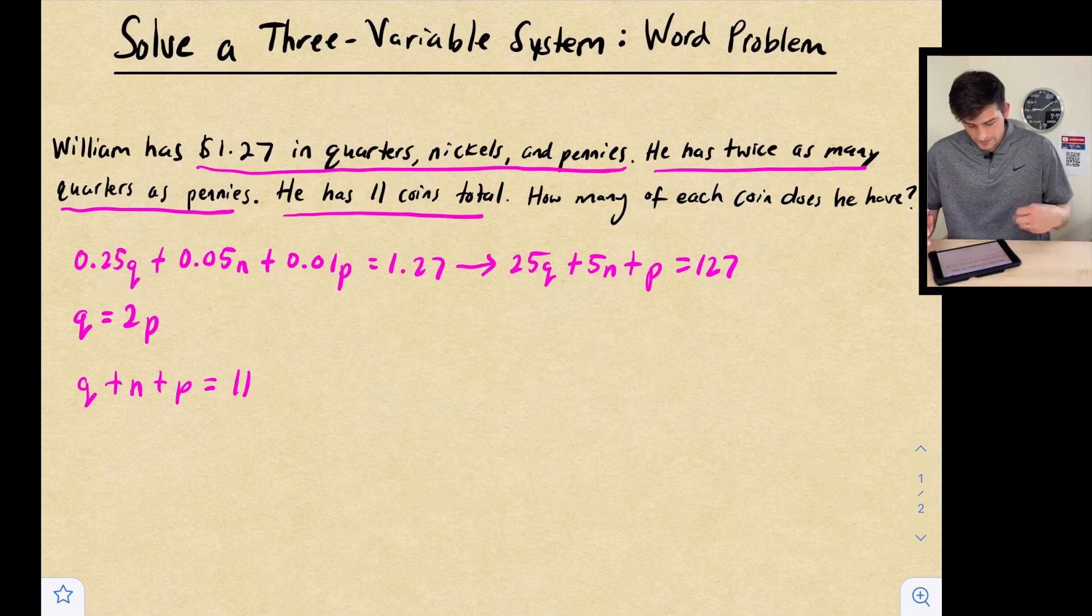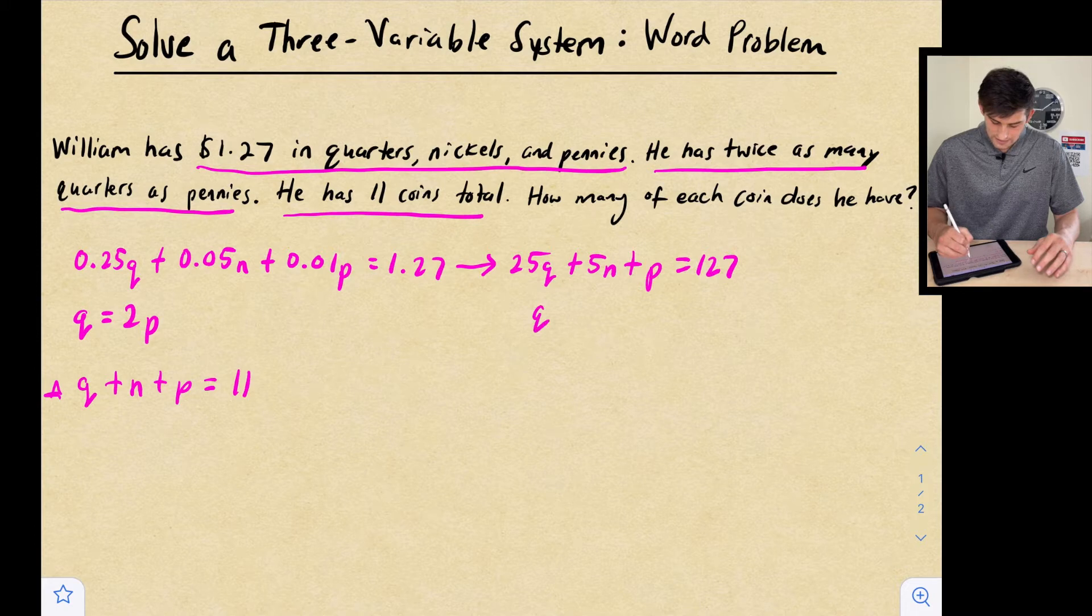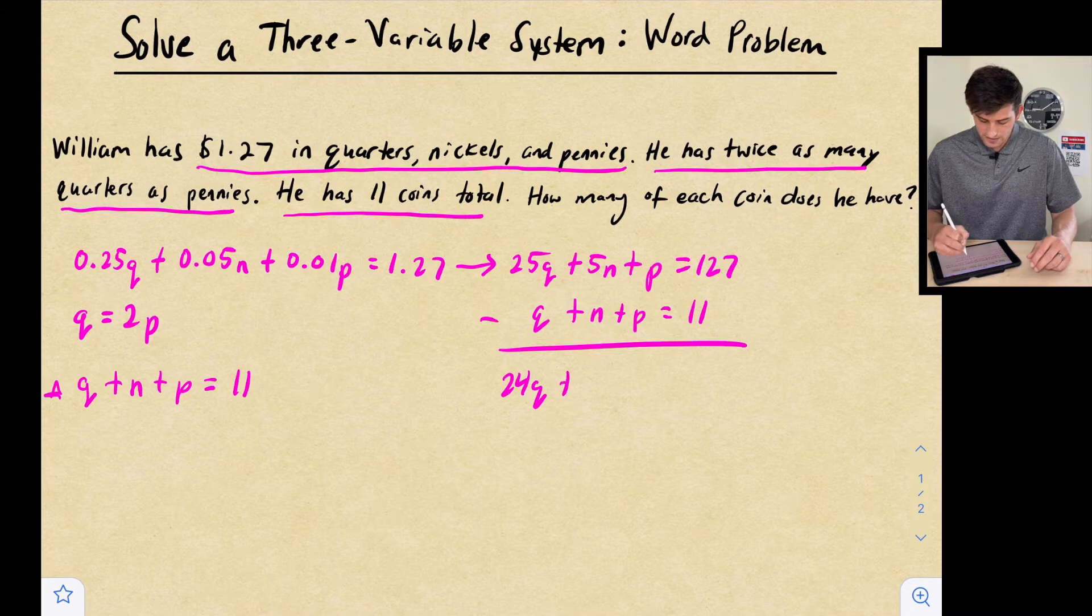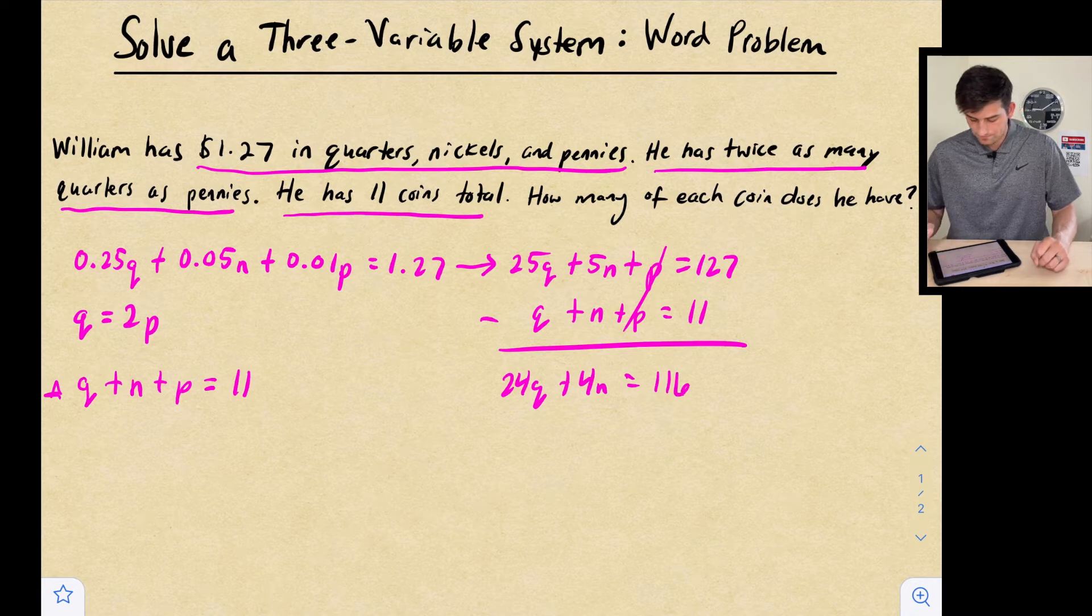Now what we can do, let's take our bottom equation here and let's write it next to or under it like this. And let's eliminate P. So we're going to do 24Q minus Q would be 24Q. 5N minus N would be 4N. P is going to go away. And 127 minus 11 would be 116. So now we have that equation, 24Q plus 4N equals 116.